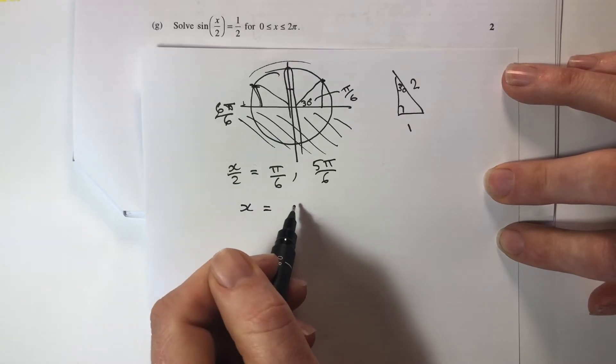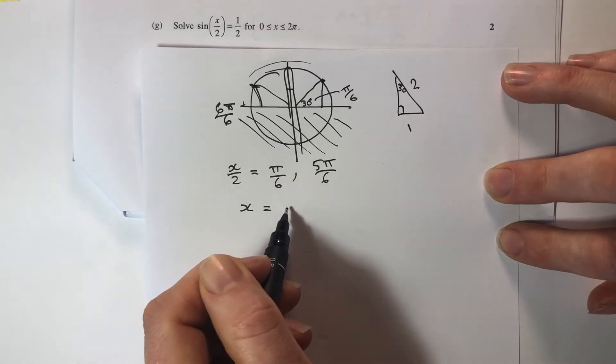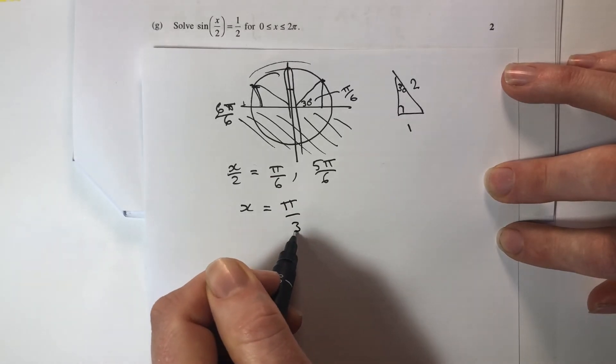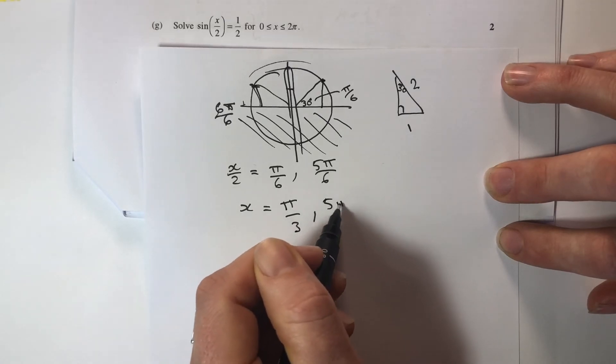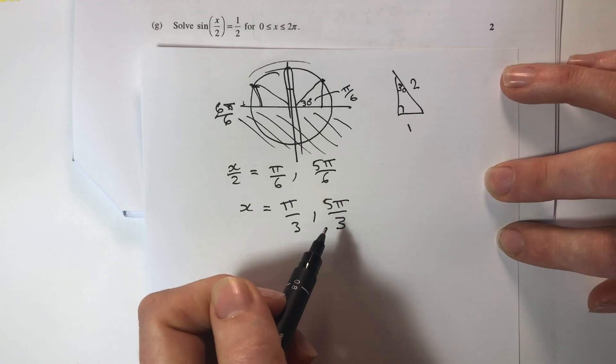To find x we would double our answers. Doubling would be timesing by 2 on the top or just doubling the bottom, getting rid of the piece on the bottom. So that's going to be π on 3 or 5π on 3, which again is within the original domain of 0 through to 2π.